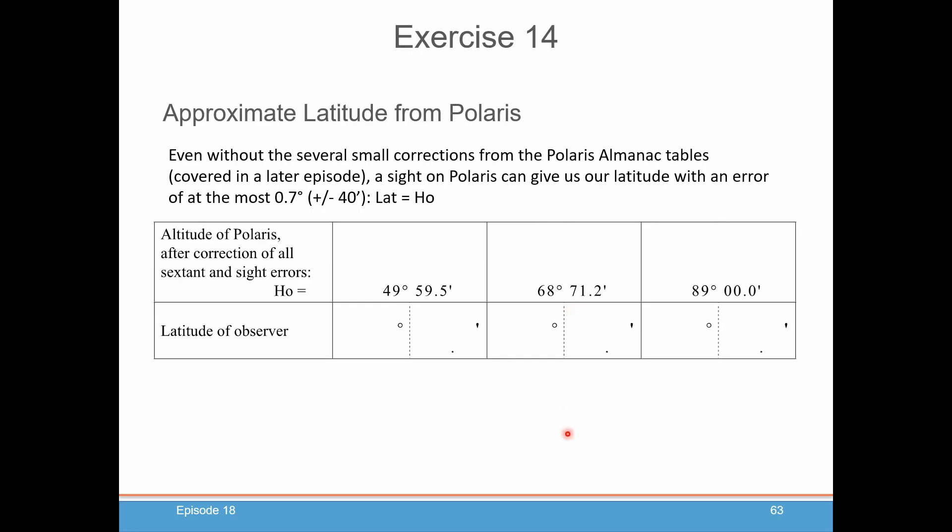So, here's an exercise that you can do. You want to get your approximate latitude from Polaris. And again, this is just basically telling you what I just said. So, what you're going to do is you're going to fill in your latitude knowing that you had observed these heights after you did all your sextant and sight corrections. And then the answers will be in the exercise book.